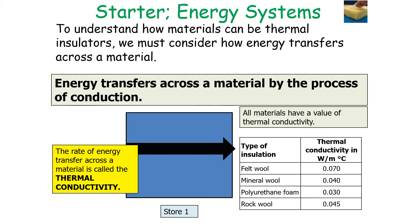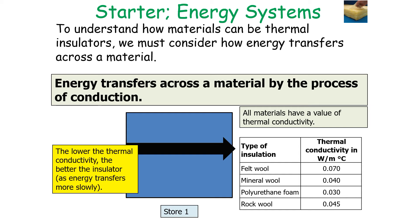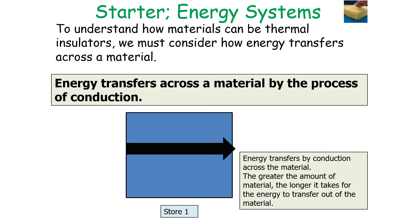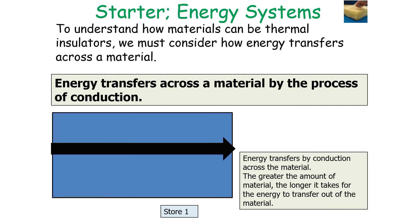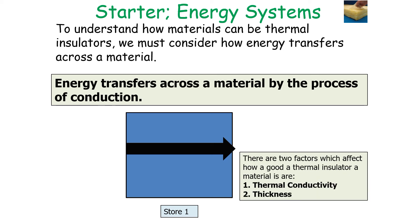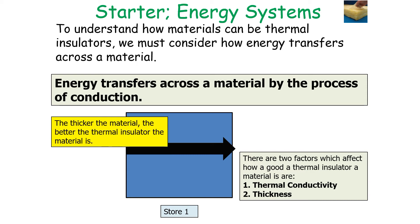The higher the thermal conductivity, the worse the insulator, because energy is transferred more quickly. The lower the thermal conductivity, the better the insulator, as energy transfers slowly. The best thermal insulator in the example shown is polyurethane foam, as it has the lowest thermal conductivity out of the four selected. In addition, the greater the amount of solid material, the longer it takes for energy to transfer out — so increasing the size or thickness of your material means energy takes longer to transfer. There are two factors which affect how good a thermal insulator a material is: thermal conductivity and thickness.